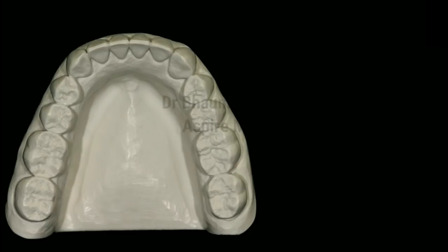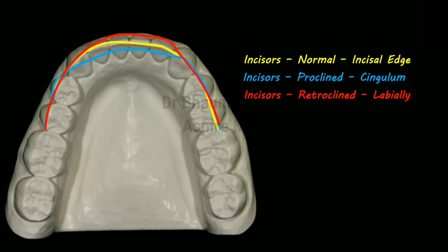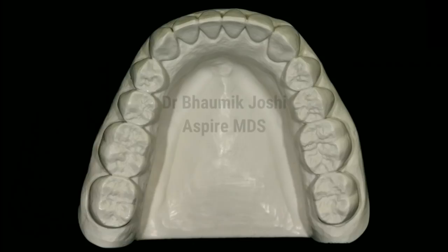If the incisors are placed in a normal position, we will pass the wire through the incisal edges. In cases where the incisors are in a proclined position, the wire has to be passed through the cingulum. If the incisors are in a retroclined position, we have to pass the wire through the labial surface of the incisors. The goal is to get the actual arch length.